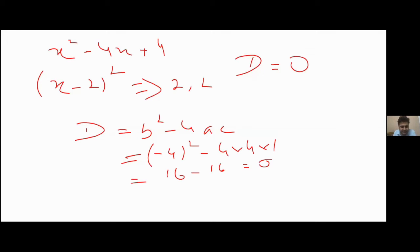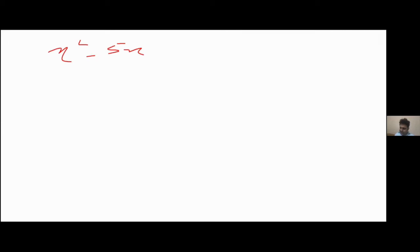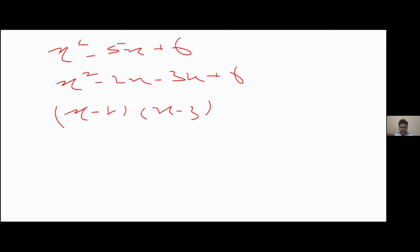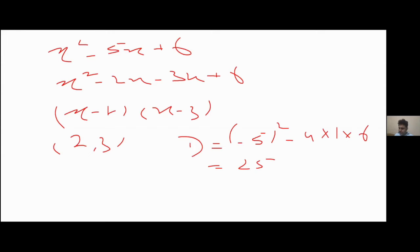Now let's see an example where D is greater than 0. Take the equation x²−5x+6. By middle term split, we get (x−2)(x−3), so the two roots are 2 and 3. Both are real and they are not equal. Now let's compute D: D = (−5)²−4×1×6 = 25−24 = 1, which is greater than 0. So when D > 0, the roots are real and unequal.